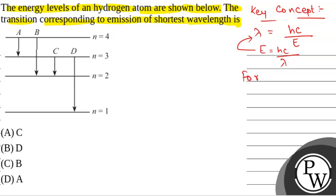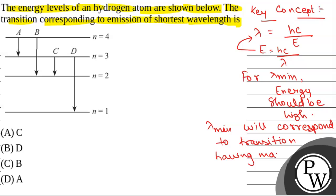For lambda minimum, energy should be high. So in case of transition, lambda minimum will correspond to transition having maximum delta E.